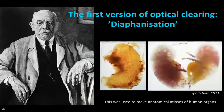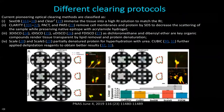Interestingly, the first version of optical clearing was performed more than 100 years ago by Spalteholz, who used optical clearing in a more primitive form so that he could draw human organs to use in atlases. Today, there are a number of different protocols available. We use the DISCO series, and specifically we use iDISCO Plus.